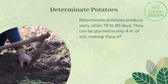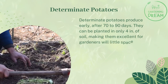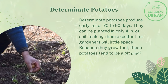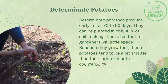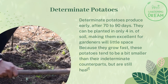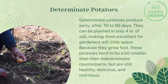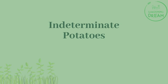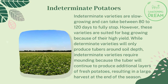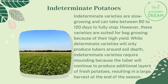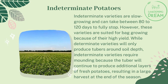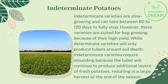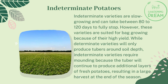Determinate potatoes can be planted in only four inches of soil, making them excellent for gardeners with little space. Because they grow fast, these potatoes tend to be a bit smaller than their indeterminate counterparts, but are still healthy, delicious, and nutritious.